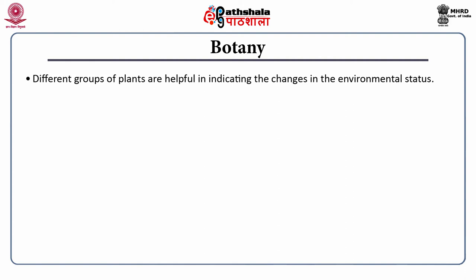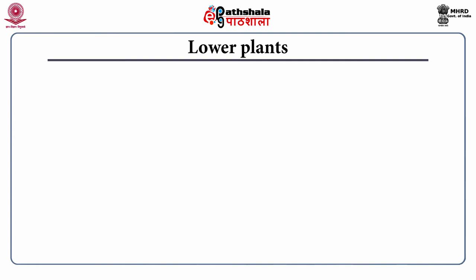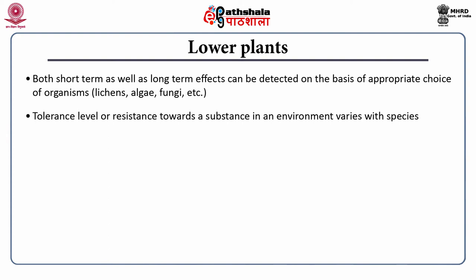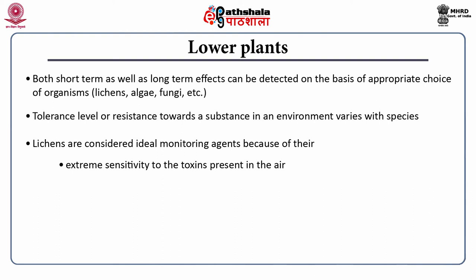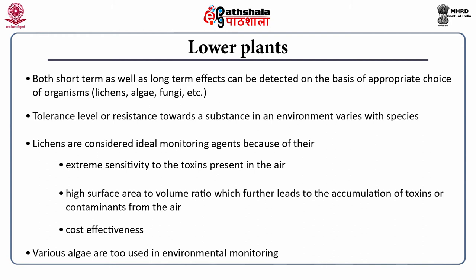Botany: Different groups of plants are helpful in indicating changes in the environment. Plants are classified into lower plants and higher plants, and both are indicators of environmental stress effects as well as any disturbance. For lower plants, both short-term and long-term effects can be detected based on appropriate choice of organisms — for example, lichens, algae, fungi, etc. Tolerance level or resistance towards a substance in the environment varies according to the species. Lichens are considered ideal monitoring agents because of their extreme sensitivity to toxins present in the air, their high surface area to volume ratio which leads to accumulation of toxins or contaminants from the air, and their cost effectiveness. Various algae are also used in environmental monitoring.